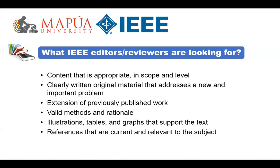The list for your reference includes: number one, content that is appropriate in scope and level — every content must be dependent on the conference goals and objectives, so make sure your paper is within their scope. Number two, clearly written original materials that address a new and important problem. Number three, extension of previously published work. Number four, valid methods and rationale. Number five, illustrations, tables, and graphs that support the text. And lastly, references that are current and relevant to the subject. All of this will be discussed when we move on to the manuscript template.